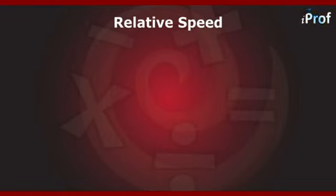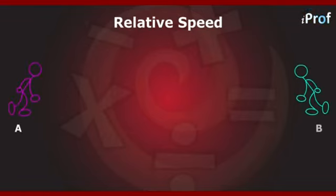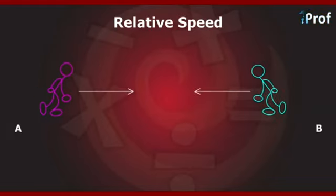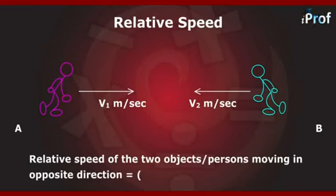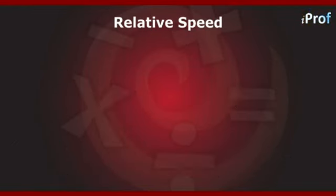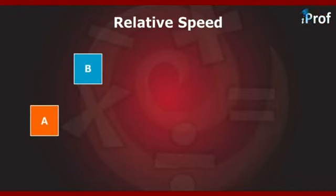Now suppose persons A and B are moving in opposite directions with speeds v1 and v2 meters per second respectively. Then the relative speed of the two persons moving in opposite directions is equal to v1 + v2 meters per second.